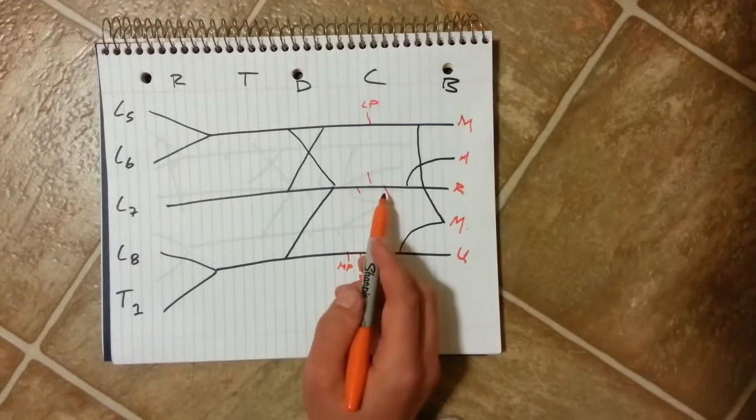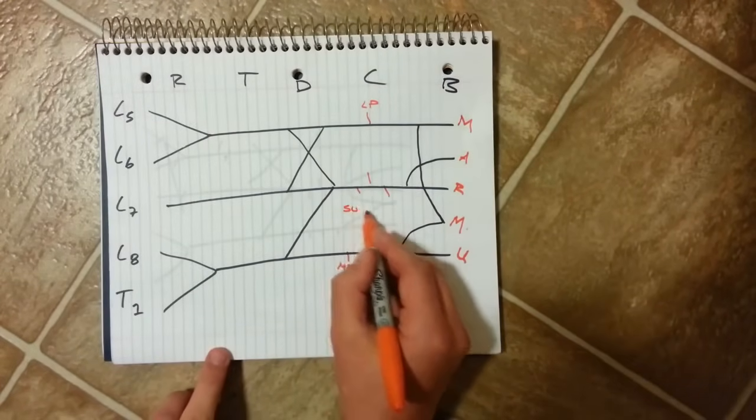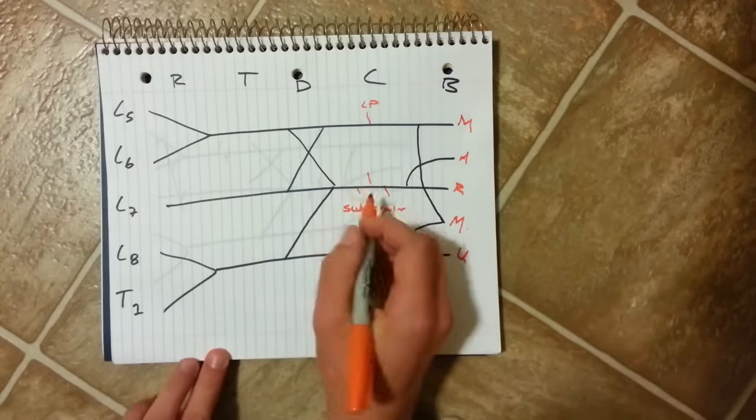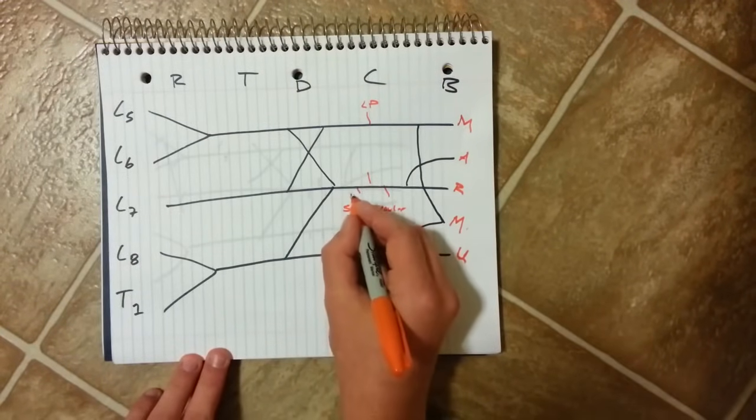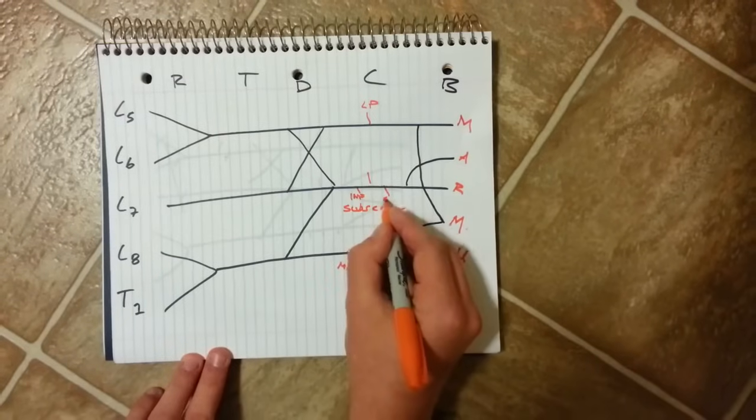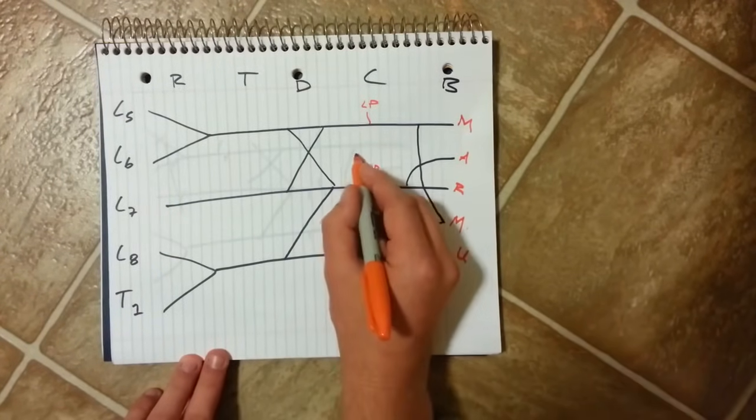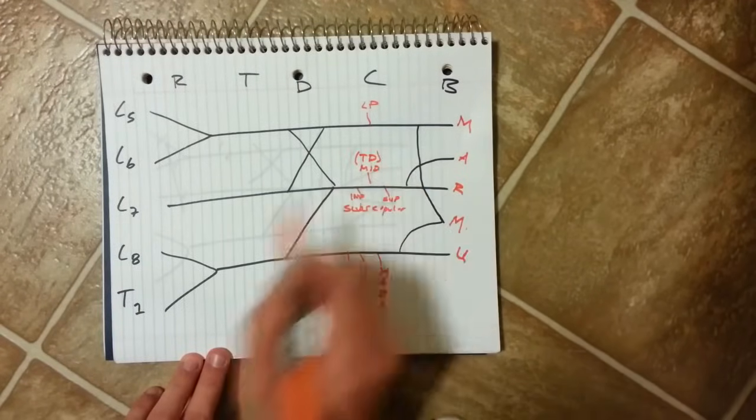These middle ones here are all subscapular nerves. And you have the inferior and the superior and the middle. And the middle subscapular nerve is also known as the thoracodorsal nerve.